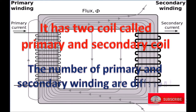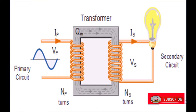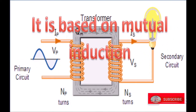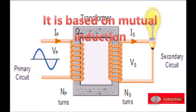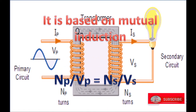The number of primary and secondary windings are different to change the input and output voltage of alternating current. A transformer is based on mutual induction, in which the ratio of the number of primary windings to the voltage in the primary coil is equal to the number of secondary windings to the voltage in the secondary coil, expressed as NP/VP = NS/VS.